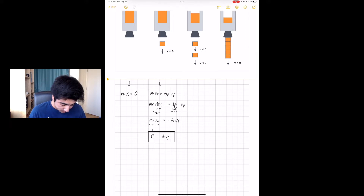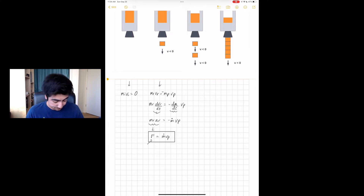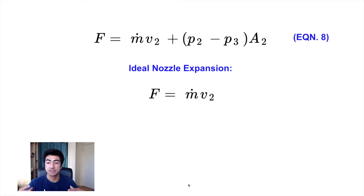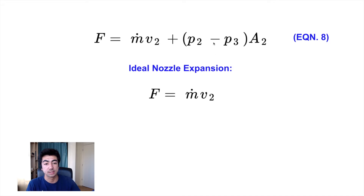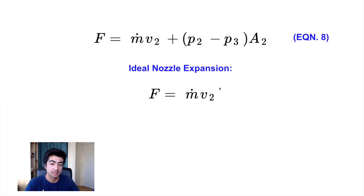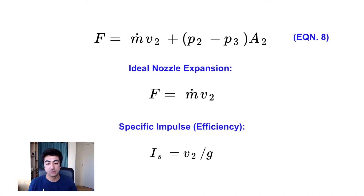This equation is our thrust equation. The force — the thrust force — is directly related to the mass flow rate of the propellant out of the bottom times the speed at which it exits. Equation number eight on the equation sheet is the full thrust equation. For an ideally expanded nozzle, which is the type we'll be designing, the pressure term drops out and we get the simple form: thrust equals mass flow rate of exhaust gas times the exit velocity. An important measure of efficiency is called specific impulse, which is directly related to the velocity you can achieve of the gases leaving the rocket engine.